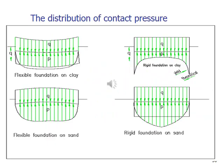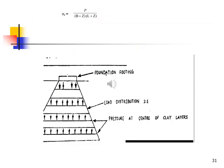Distribution of contact pressures. Flexible foundation on clay, flexible foundation on sand, rigid foundation on clay, and rigid foundation on sand. It behaves like that. The foundation of a footing is there and the load is acting on it. The load distribution is 1 is to 1 or 45 degrees. It is taken and calculated for each and every layer, also can be calculated till the clay layer is there.